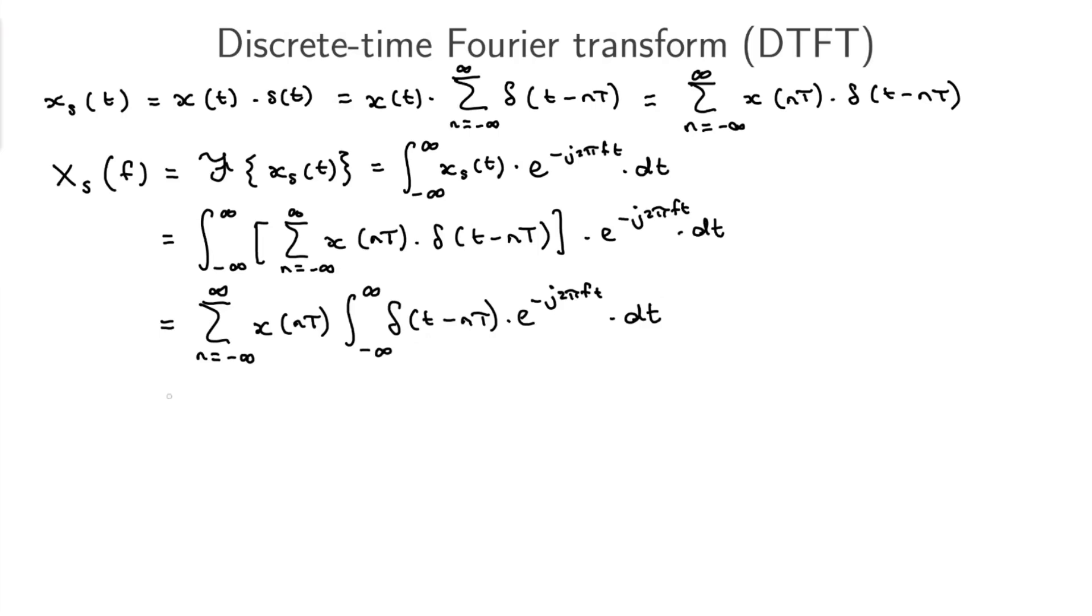So that whole thing actually reduces to the sum from minus infinity to infinity of x(nT) times, and then everywhere where there's a t here, which is there, we're going to just replace that with nT. That's what the sifting property does. So we get e^(-j2πfnT). I'm happy I have my f because I know this is a function of f, so I didn't screw up. We're actually almost done.